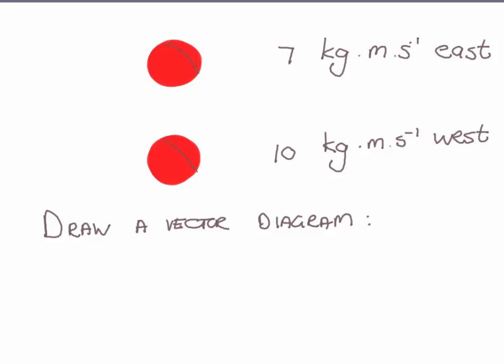A cricket ball after being bowled moves through the air with a momentum of 7 kilograms meter per second east. The batsman hits it in the opposite direction so that the ball's momentum changes to 10 kilograms meter per second west.